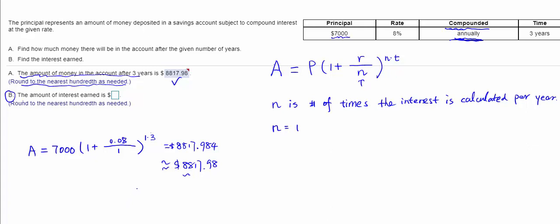That will be the interest. To calculate the interest, take the future value $8,817.98 and subtract the principal. The answer is $1,817.98, which is the amount of interest earned in these three years.